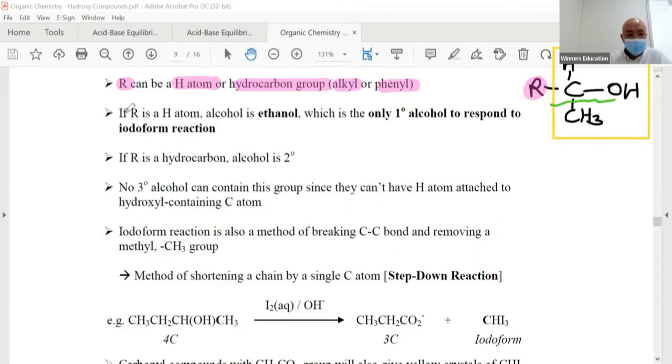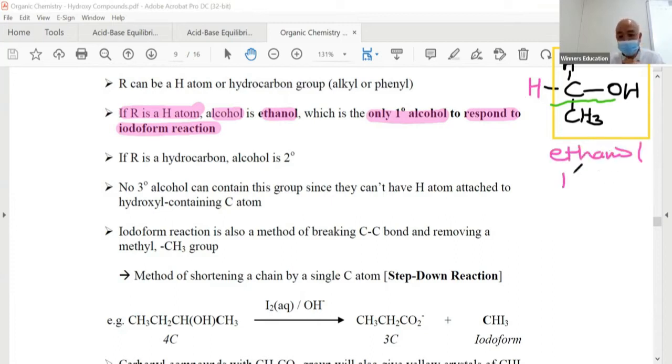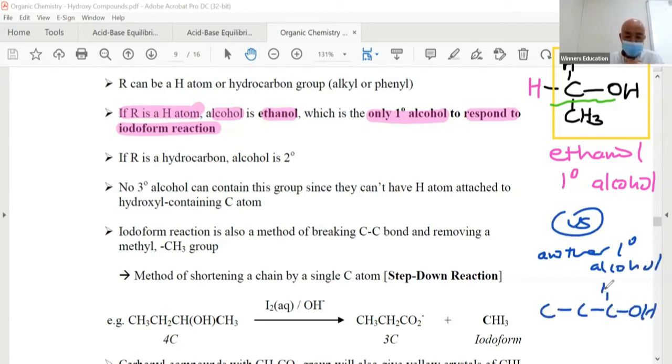Now, if R is hydrogen atom, if there is hydrogen atom, then the alcohol is ethanol, which is the only primary alcohol that will respond to the iodoform reaction. If you take a look, let's look at it. If this is a H, isn't this ethanol? Yes? Which is the primary alcohol? And it's the only one that has that yellow color group versus another primary alcohol. Who? Let's say propanol. It's propanol, right? You look at it, it doesn't have that group that you want, which is the CH3. Make sense? It doesn't have the yellow color group. Make sense?